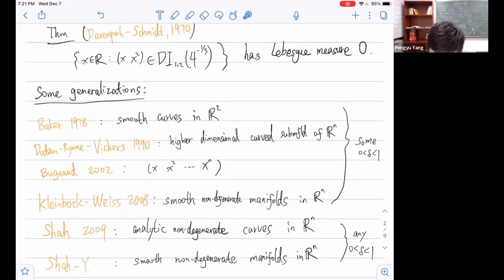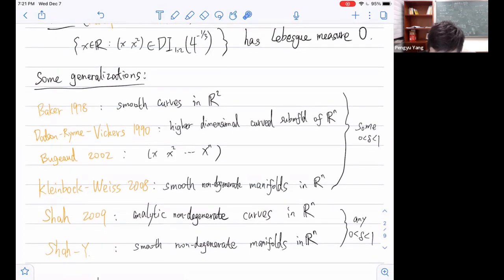They showed that on this curve, the set of points which are 4 to the negative 1/3 improvable vectors has Lebesgue measure zero. Then there are several generalizations in different directions. First, Baker generalized to smooth curves in R². In 1990, Dodson, Rynne, and Vickers generalized to higher dimensional curve submanifolds of R^n. In 2002, Beresnevich generalized to the Veronese curve in n-dimensional space. And then using Dani correspondence, Kleinbock and Weiss in 2008 generalized this to smooth non-degenerate manifolds in R^n.